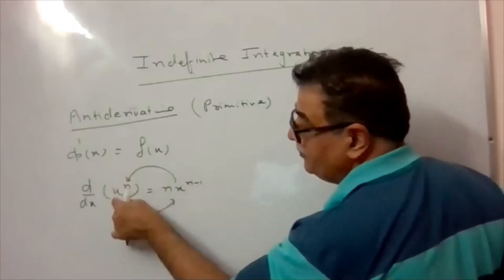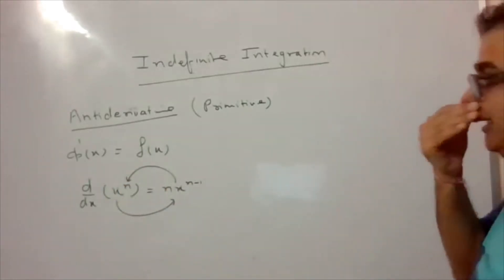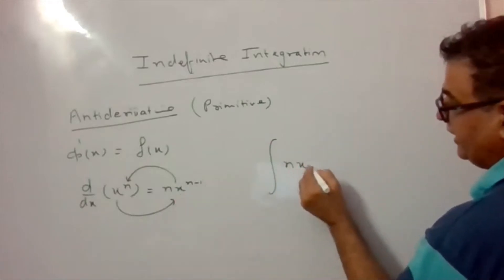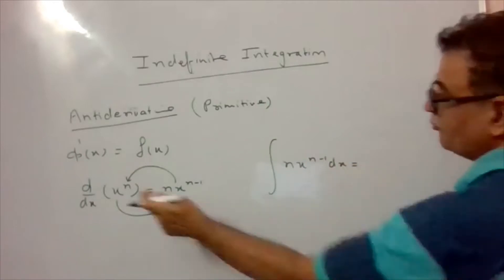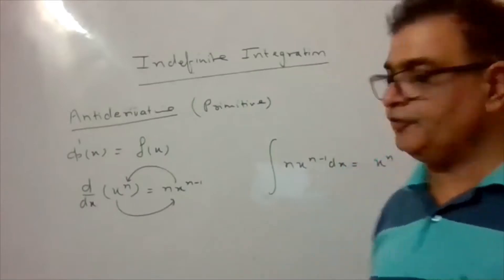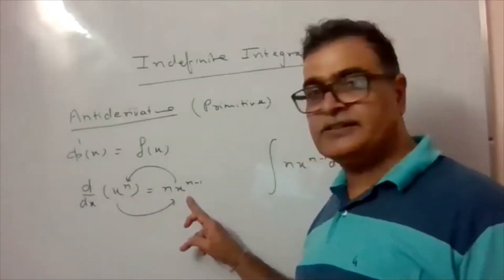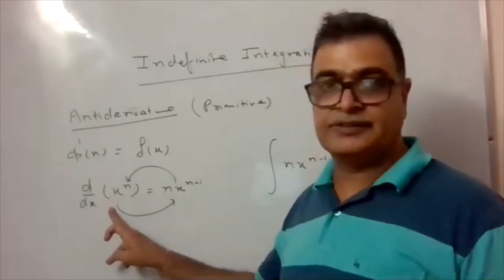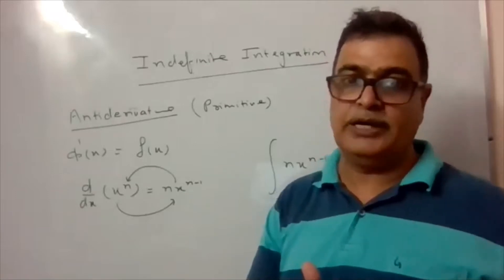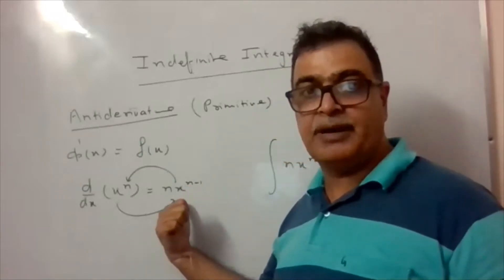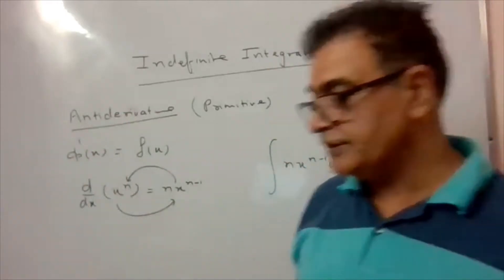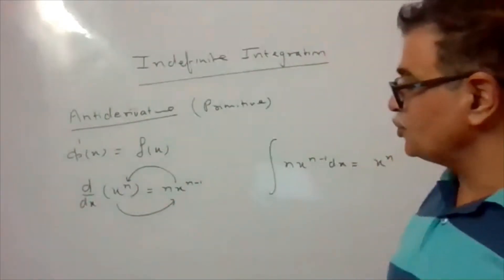Then its antiderivative will be written as: integration of n·x^(n-1) dx equals x^n. So the derivative of x^n is n·x^(n-1), and the antiderivative (or integration) of n·x^(n-1) is x^n. This is called the antiderivative.